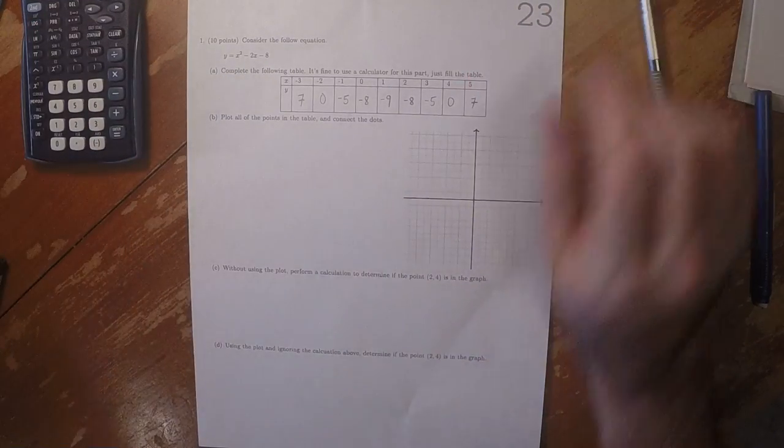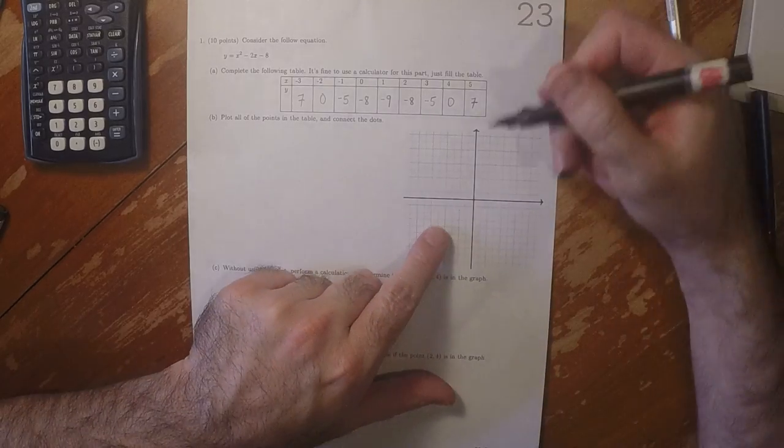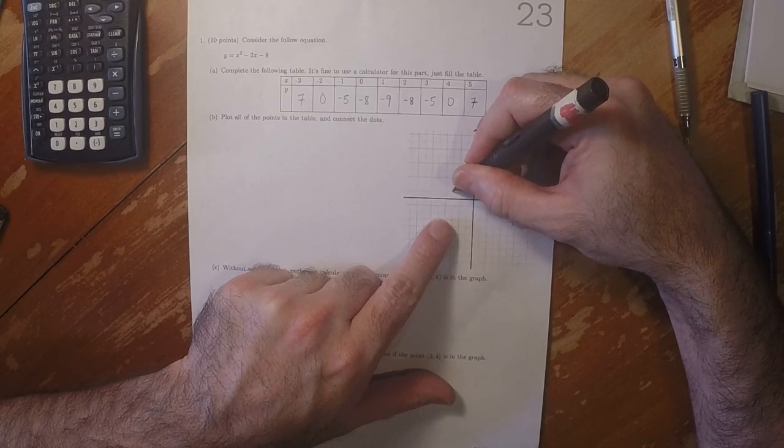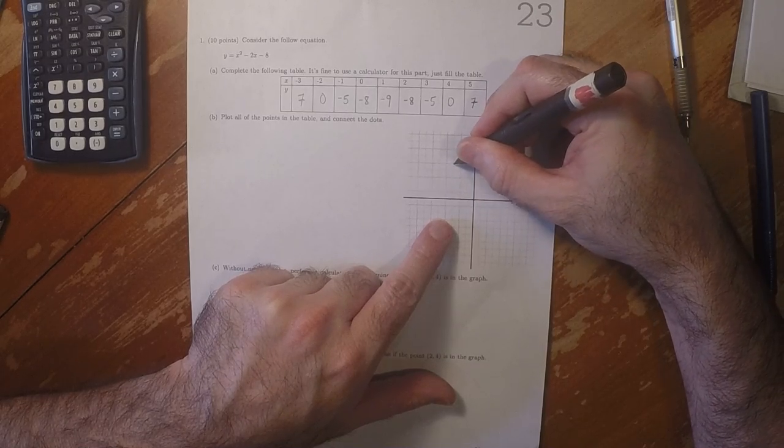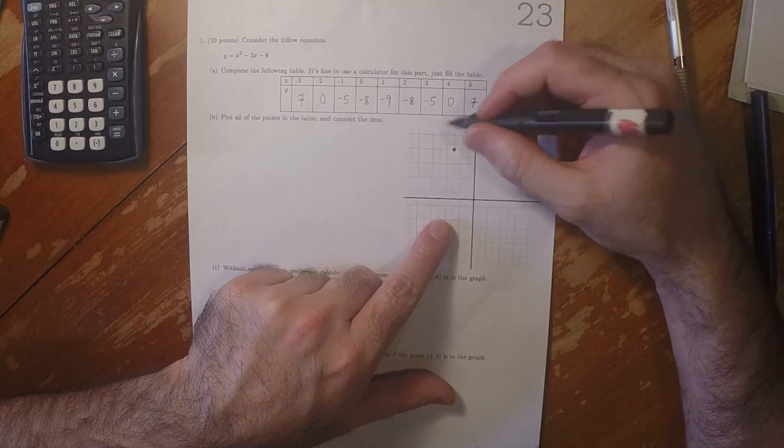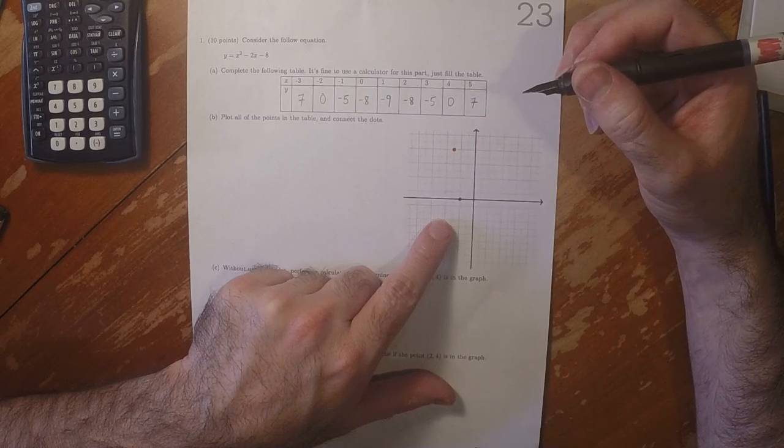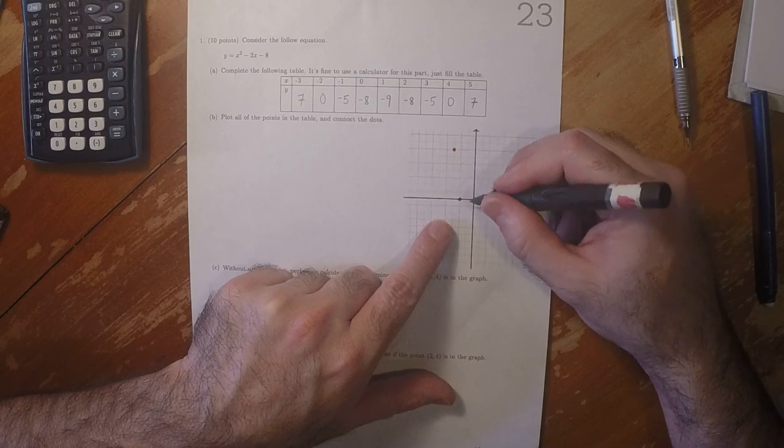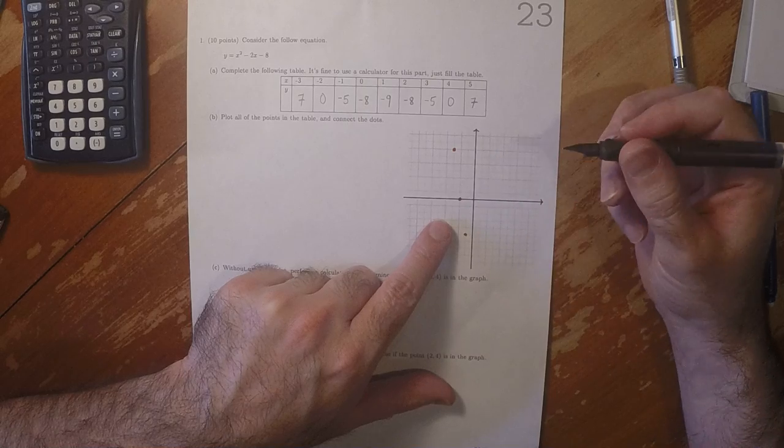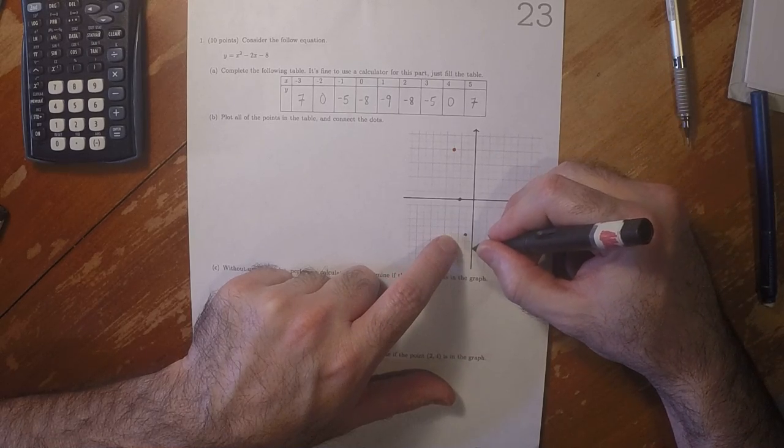Plot all the points in the table and connect the dots. So negative 3 comma 7, at negative 2 comma 0, at negative 1 comma negative 5, at 0 comma negative 8.